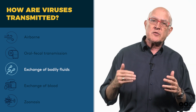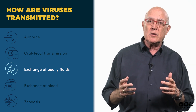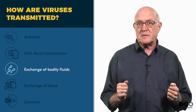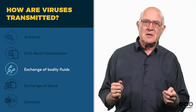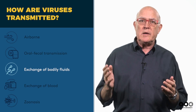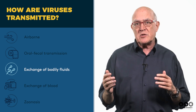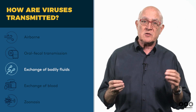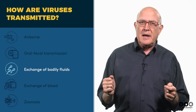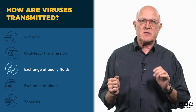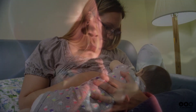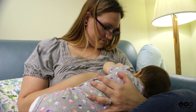Person-to-person transfer of viruses can occur when intimate exchange of bodily fluids takes place. Sexual intercourse is an obvious route of transmission, when either semen or vaginal secretions contain viruses such as HIV, herpes, hepatitis, and others. Infected mother-to-child transmission can occur even in the womb, or during birth, as well as through breastfeeding.